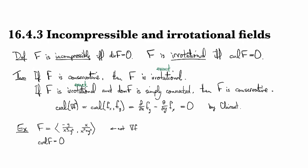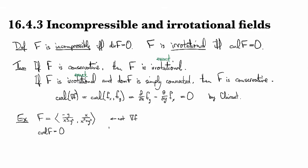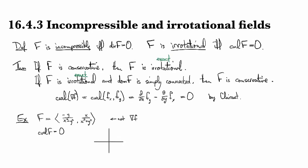Right? So imagine what it would look like if this actually were conservative, so that the flow lines go like this. Now if this were a gradient then that means these are the directions that you would have to go